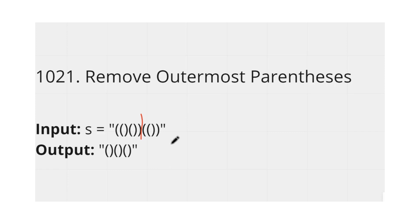When we get a valid string of parentheses, we split our string from that point and remove the outermost parentheses of each valid substring. In this example, we split here — this is one valid parenthesis string and this is another. We remove the outermost brackets from each, and the remaining parts are our answer.